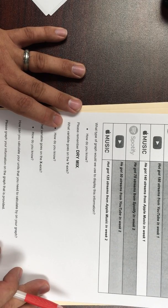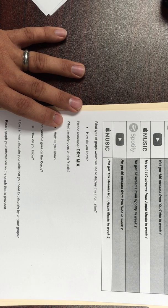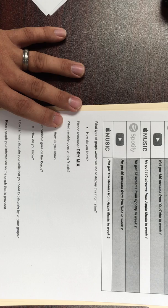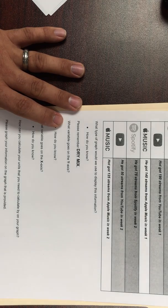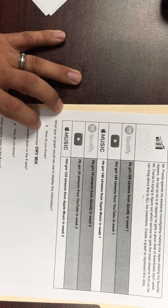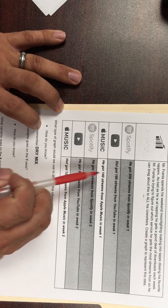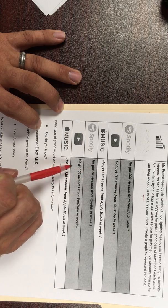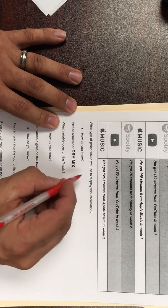What type of graph would he use to display this information? Now remember, there's a couple different types: pie, line, scatterplot, histogram, and bar. Since we are comparing two different variables of the same type, in this instance, we're comparing week one and week two of Spotify, week one and week two of YouTube, and week one and week two of Apple Music, we're going to end up using a bar graph because we're comparing stuff.